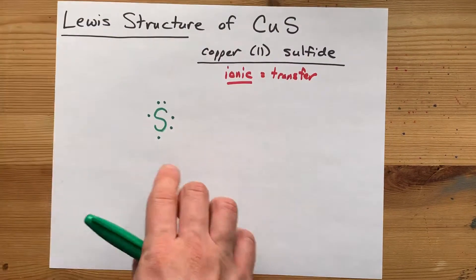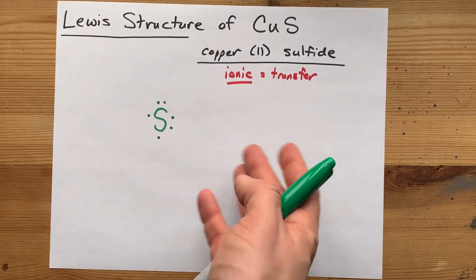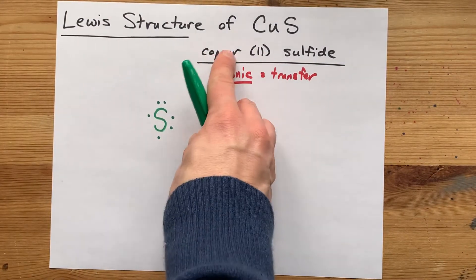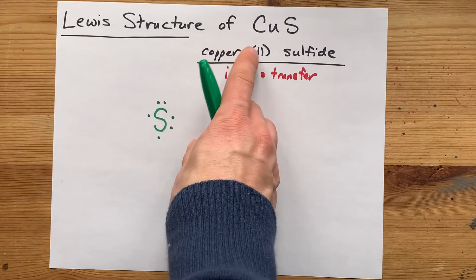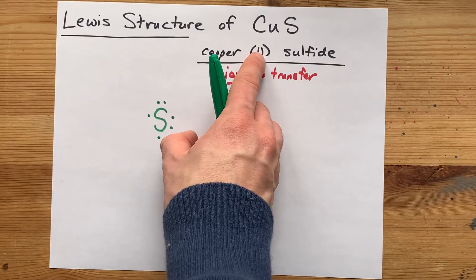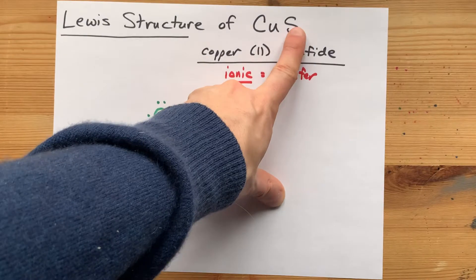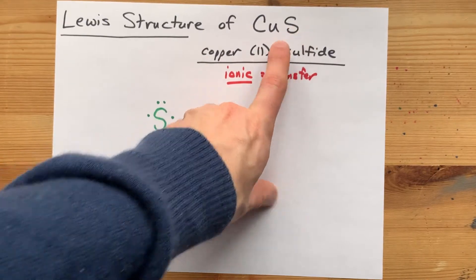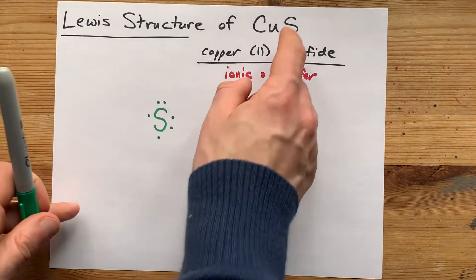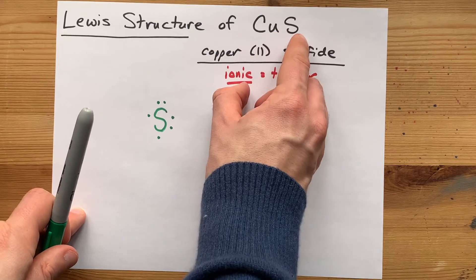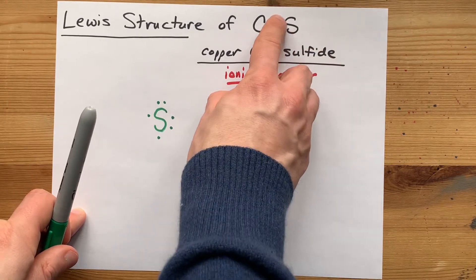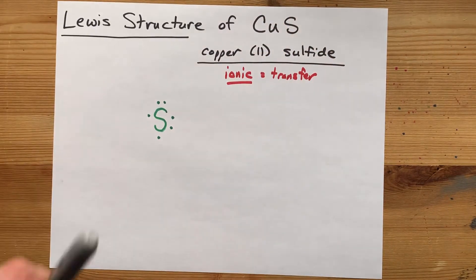Instead, you have to go based on the charge that you know it ends up with. Here, by name, it's definitely copper-2, but that information is also hidden here. Sulfur always wants a charge of minus 2, and in order to balance it on a 1-to-1 ratio, the copper would have needed a charge of positive 2 as well.